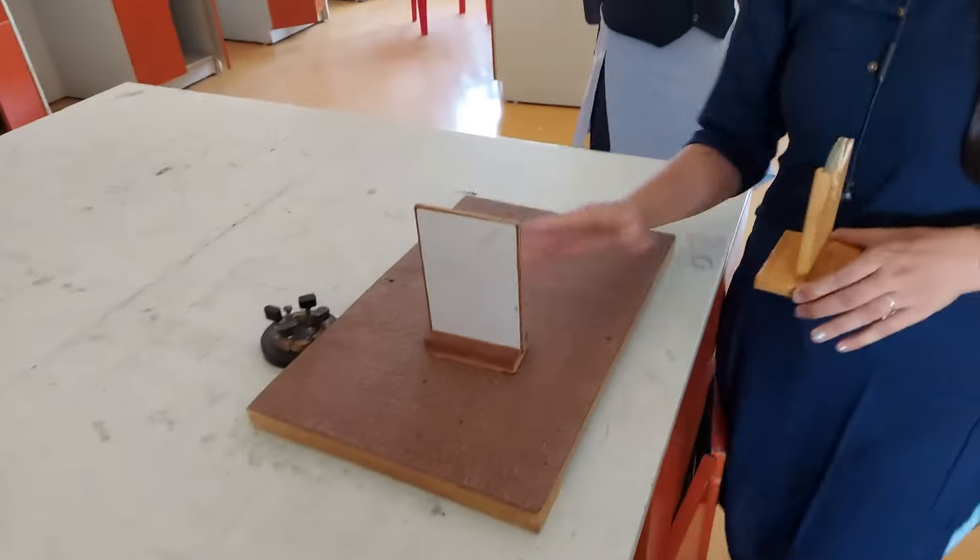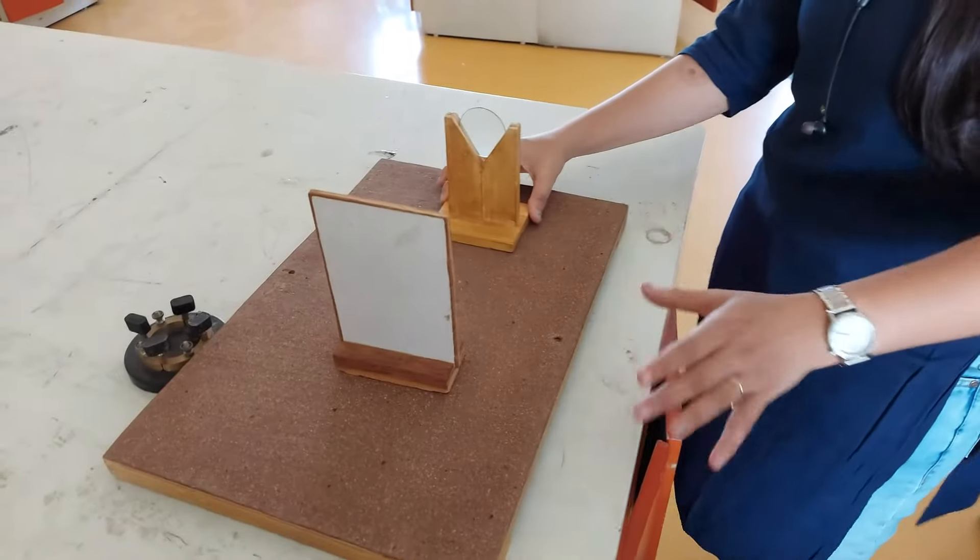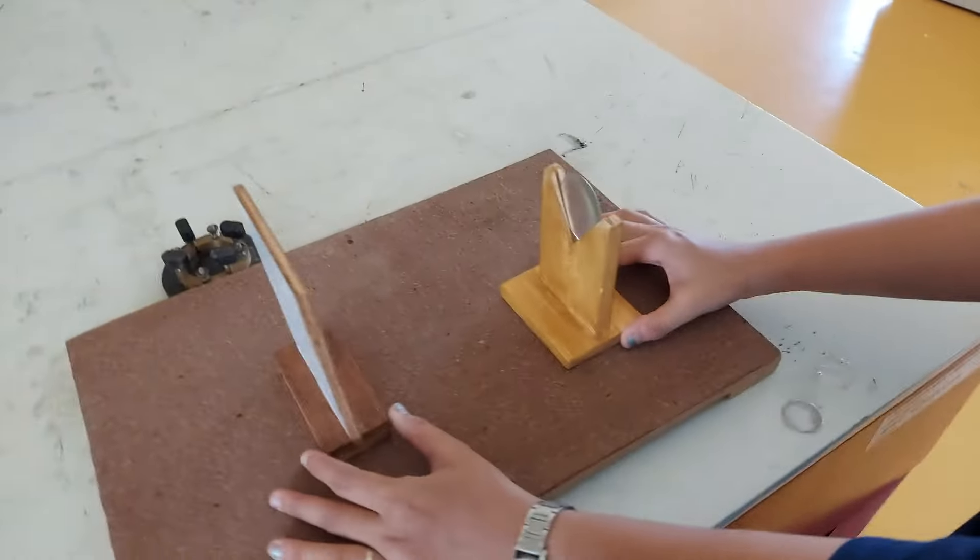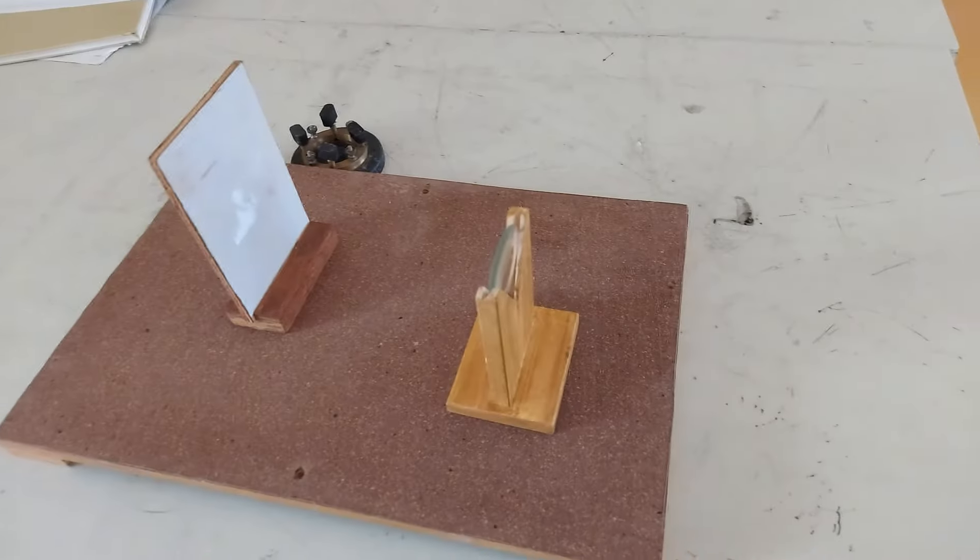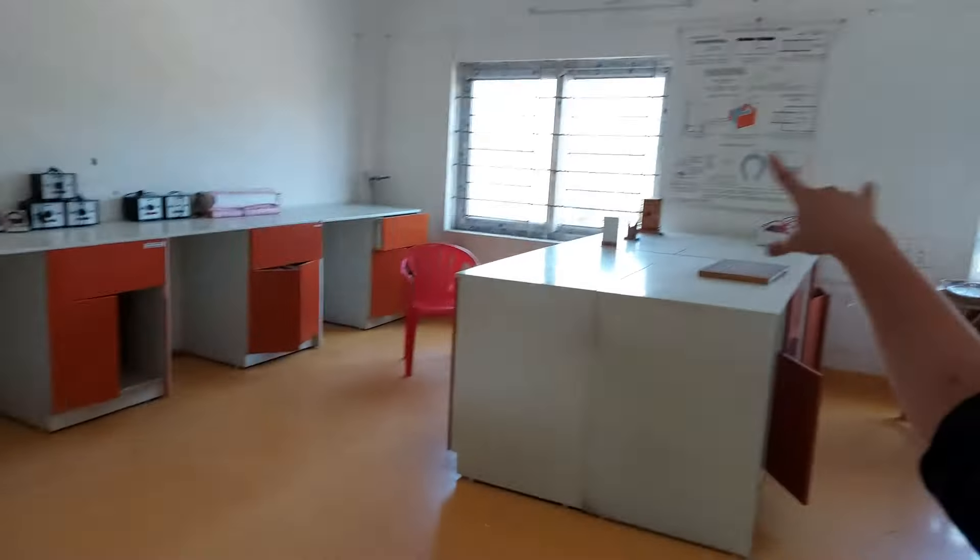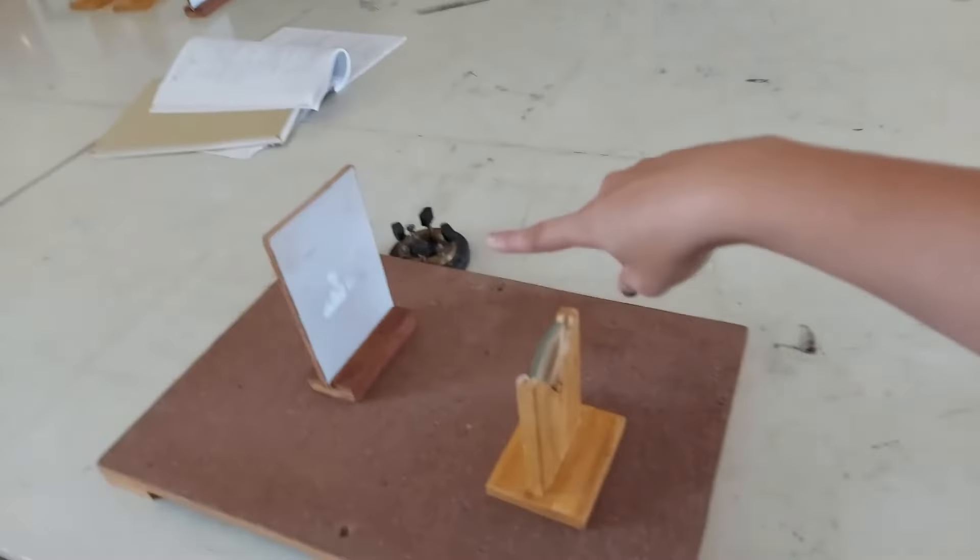To verify whether you are correct or not, you can take the lens and screen. Actually, it's not necessary, but just for verification. Take the lens and see if there's a window or something nearby.